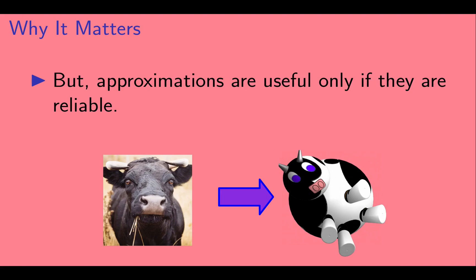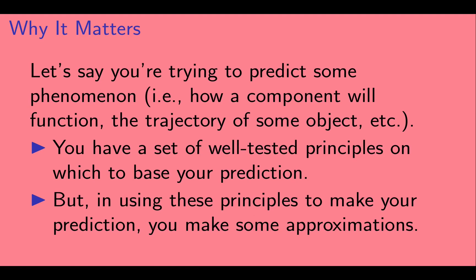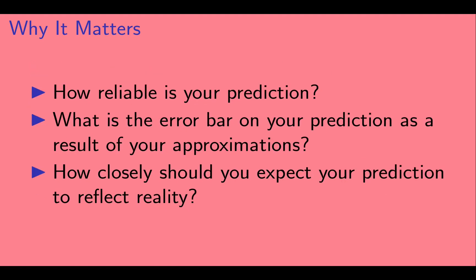But approximations are useful only if they are reliable. So let's say you're trying to predict some phenomenon — some fairly well understood thing, like how a component in a machine will function or some object's trajectory. Let's say you have a set of well-tested principles upon which to base your prediction, but in using these principles you make some approximations. How reliable is your prediction? What is the error bar on your prediction as a result of your approximations, and how closely should you expect your prediction to reflect reality?